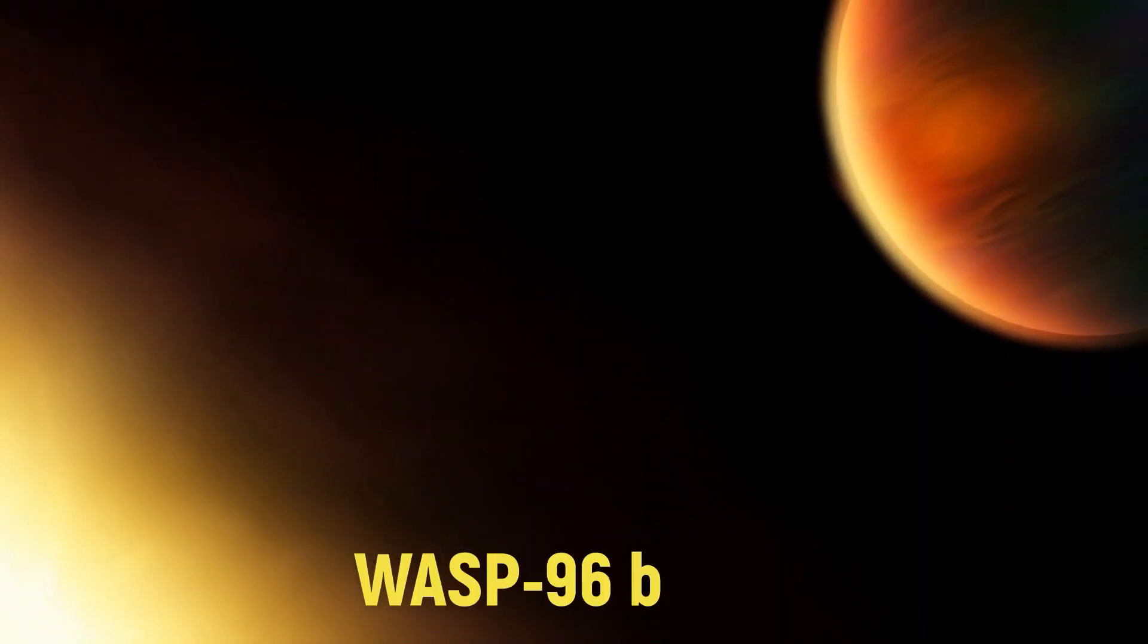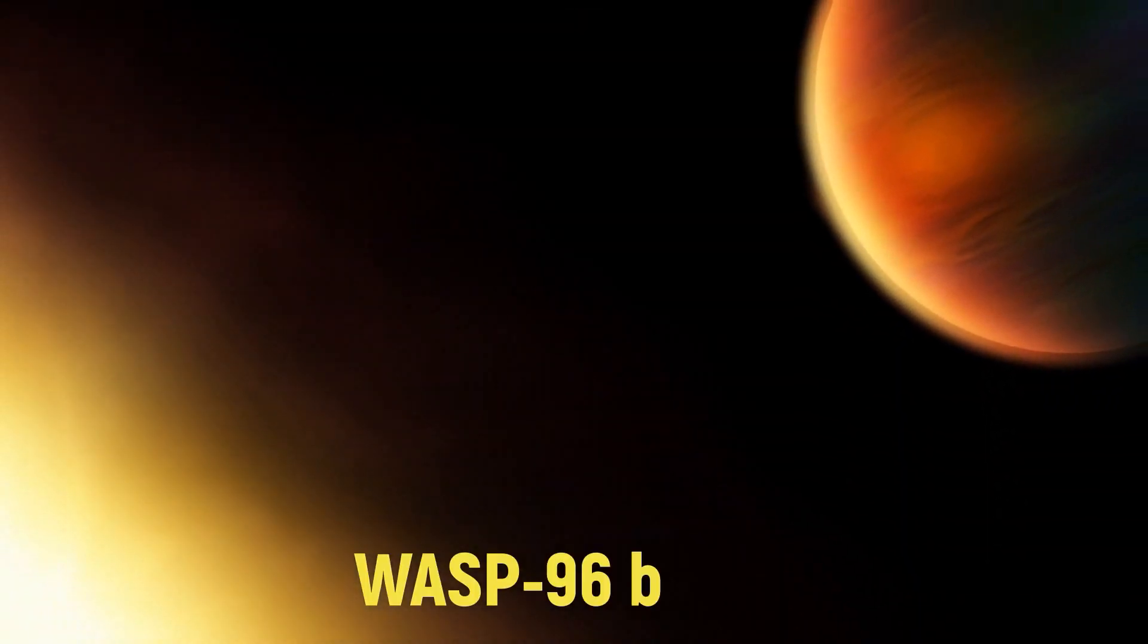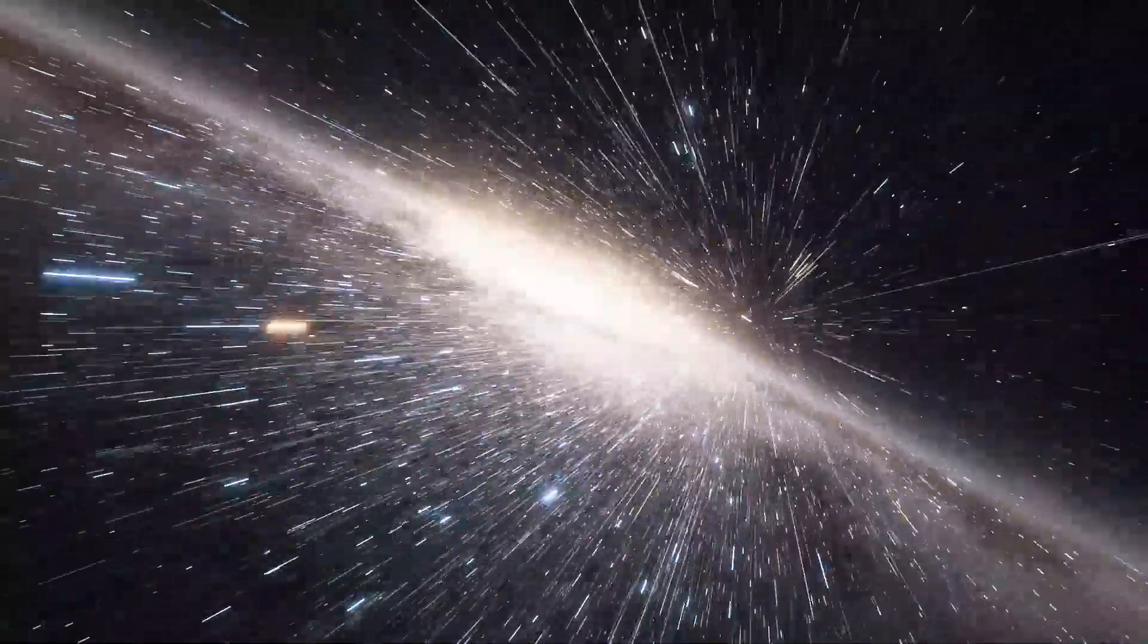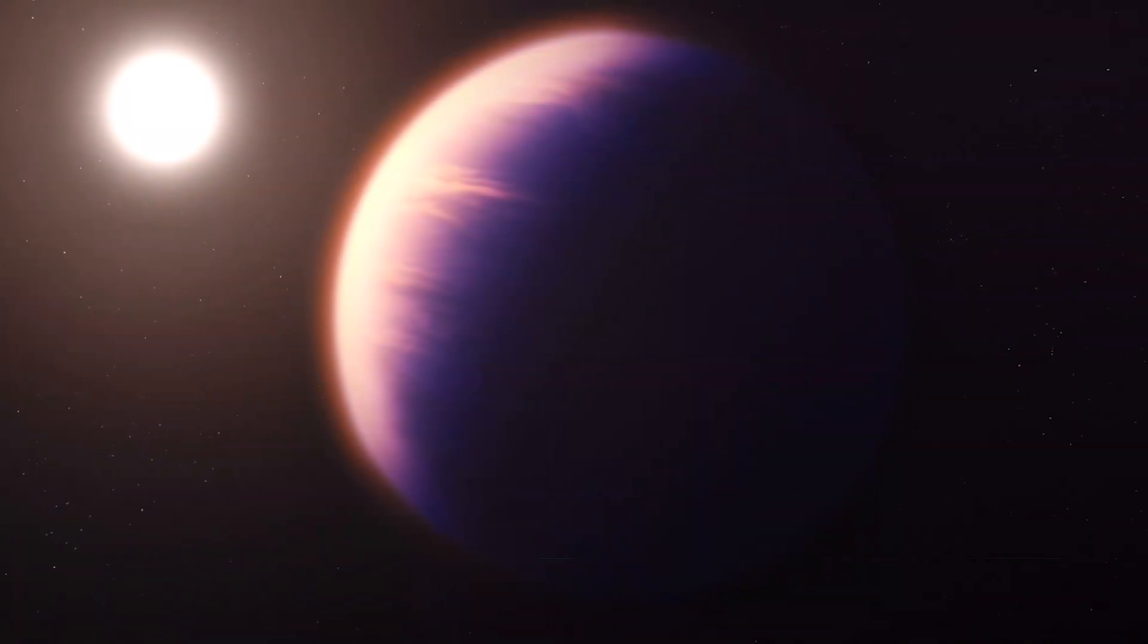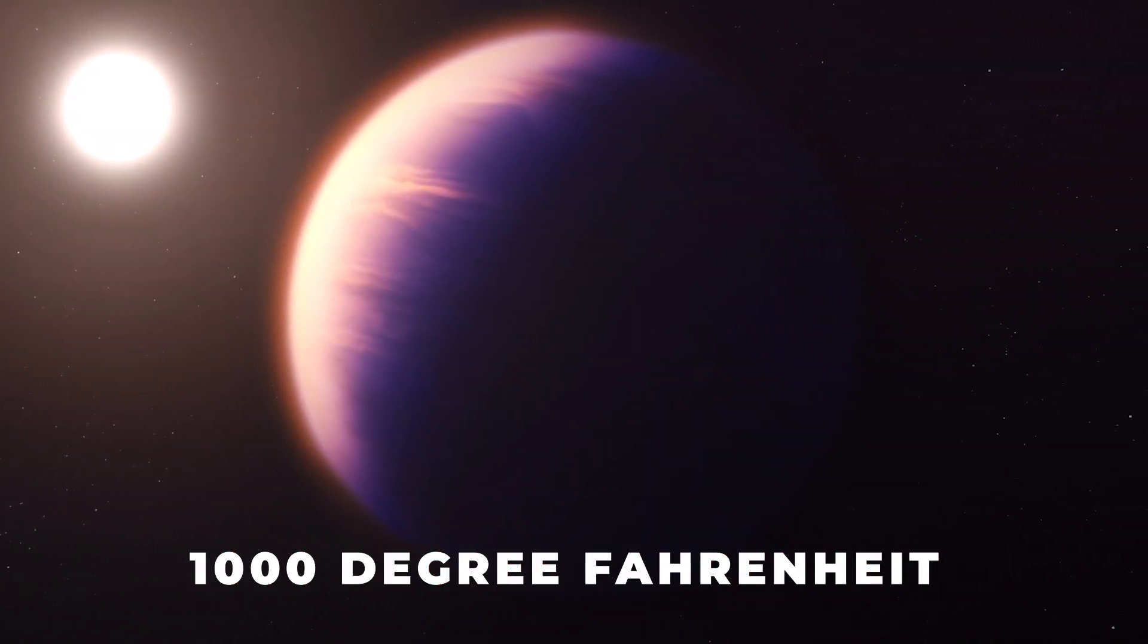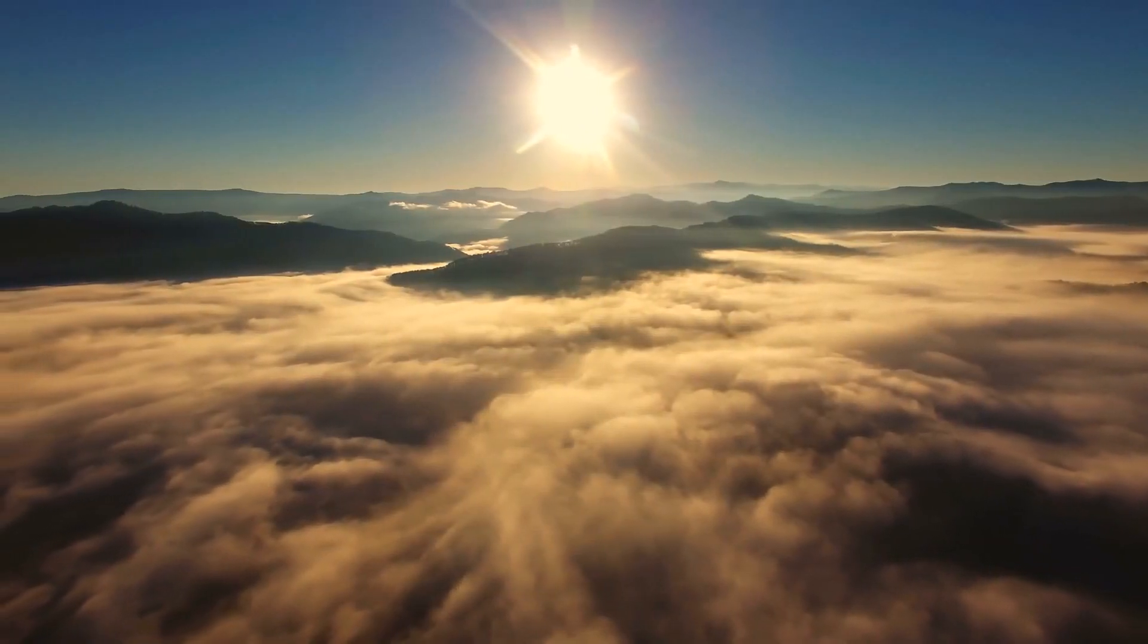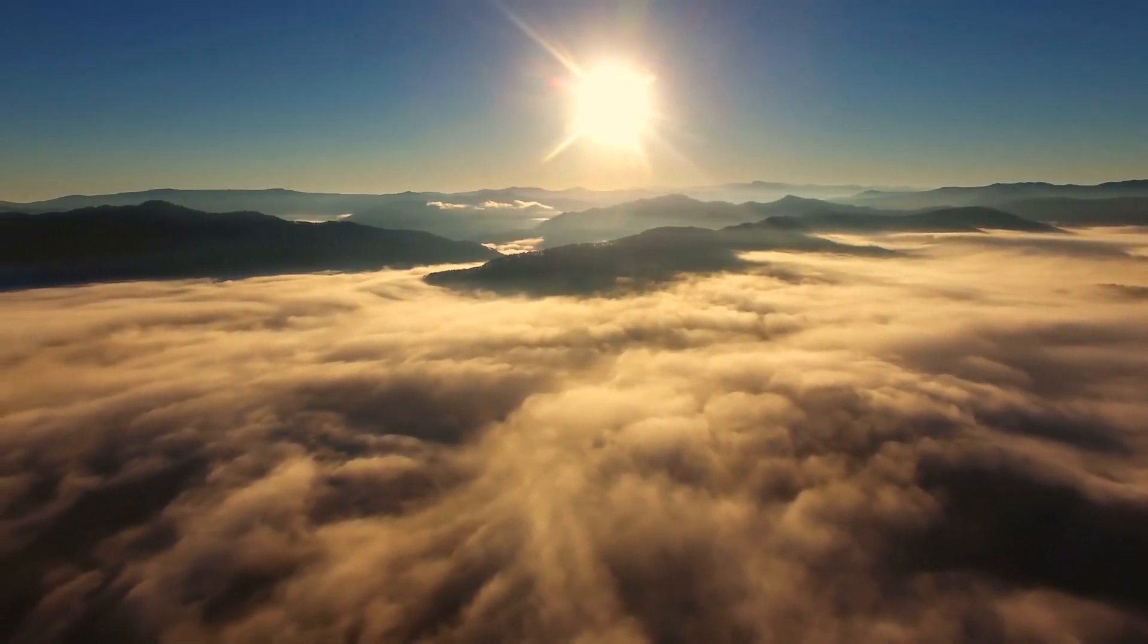This was when it was able to zone in on WASP-96b, which is an exoplanet some 1,150 light years from Earth. This puffy gas giant has a temperature of 1,000 degrees Fahrenheit, but showed distinct signatures of water vapors in its clouds and haze.